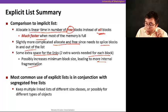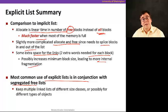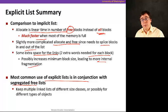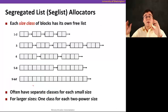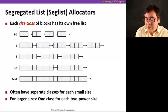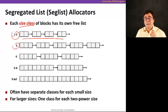The most common use of explicit free lists is with what we call segregated free lists. The idea is to keep multiple linked lists of different size classes of free blocks, and even possibly different types of objects. We have a bunch of size classes, and for each size class, we have an explicit free list. For example, sizes one and two share one list, size three has another, and so on.